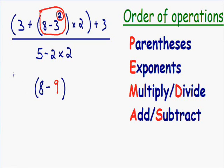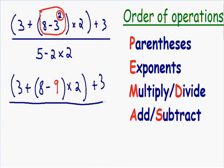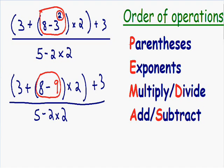The rest of the expression is going to stay exactly the same. On the bottom we have five minus two times two. Now notice how we still have our parentheses, and our parentheses is our first order of operations, so we need to get rid of our parentheses first.